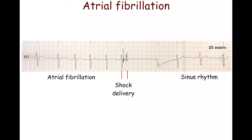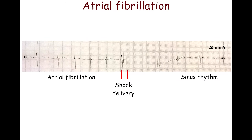Electrical cardioversion immediately restores sinus rhythm. On this strip, the initial rhythm is atrial fibrillation with a mean ventricular rate of 84 BPM. Sinus rhythm with a rate of 57 beats per minute follows the shock.